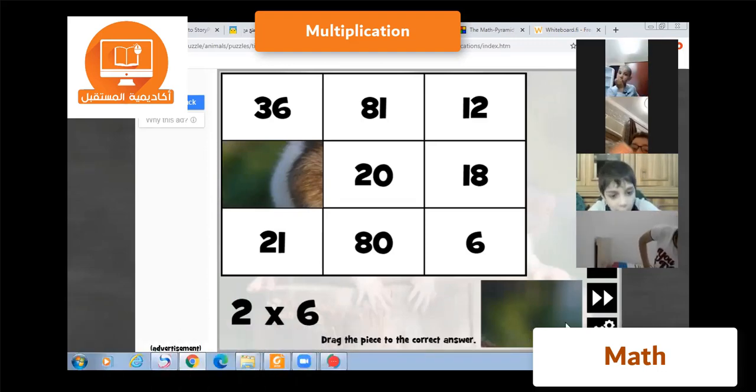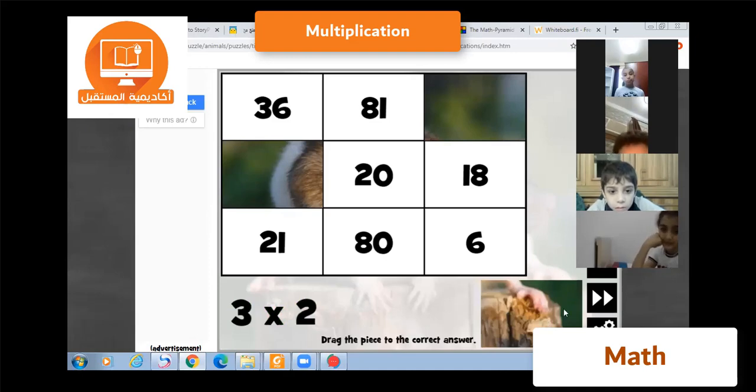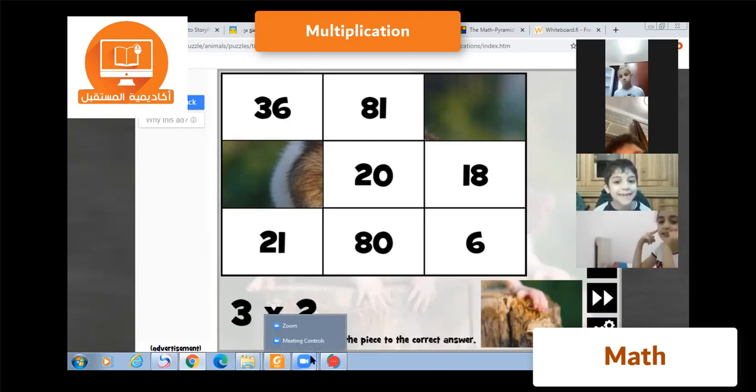عمر محسن, two times six equals twelve. Bravo! عمر محسن, three times two equals six. Bravo!